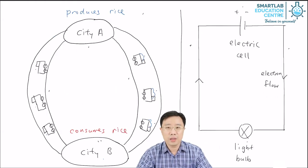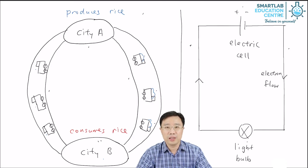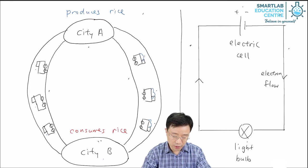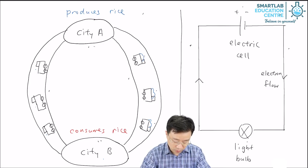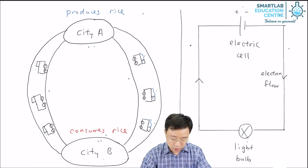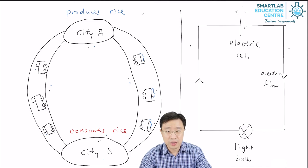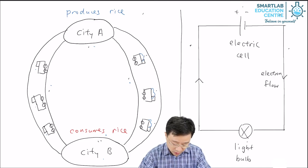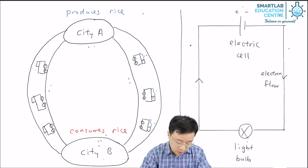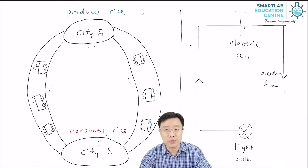So if we look at the diagram for the story again, we see that we have City A producing rice, City B consuming rice, the roads linking City A to City B, and the trucks carrying the rice from City A to City B, and then the trucks returning from City B to City A.